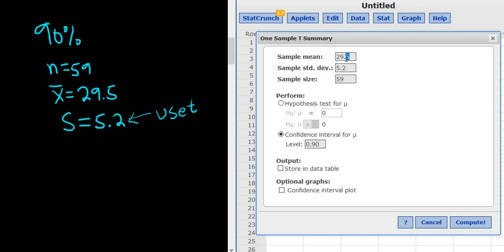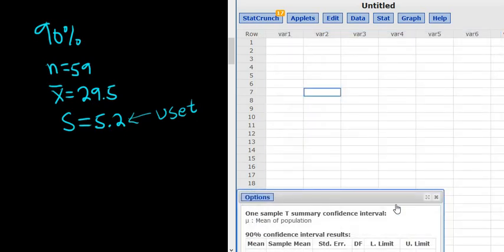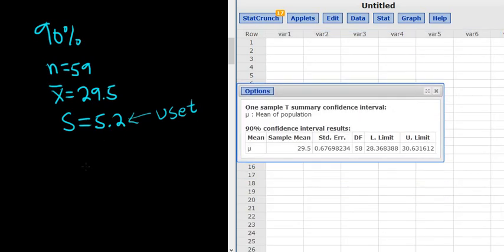So 29.5, 5.2, 59, change it to 90. Click compute. It's always the lower and upper limit. I'll use two decimals. So it would be 28.37, that's our lower limit. And the upper limit is 30.63.